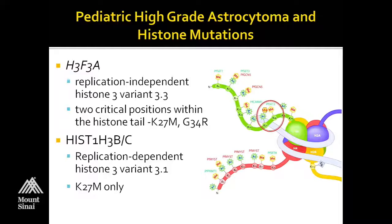For those who don't remember the histone biology: histones form this octamer and DNA gets wrapped around those. Many of the histones have tails that stick out. There are two copies of H3 in each octamer, and on these tails there are a number of predominantly lysine residues which can be modified.